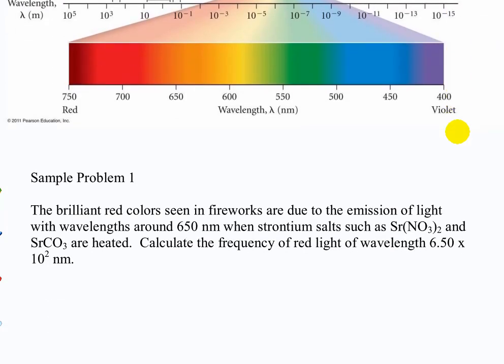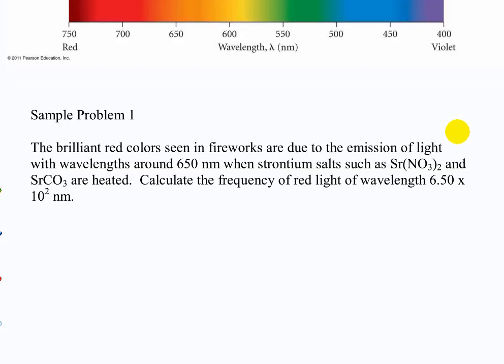So the other thing that you want to be able to do is convert between wavelength and frequency using that relationship that we just saw. So a problem like this, the brilliant red colors seen in fireworks are due to the emission of light with wavelengths around 650 nanometers when strontium salts, such as these, are heated. Calculate the frequency of red light of wavelength 6.50 times 10 to the 2 nanometers or what would also be written as just 650 nanometers. So what's the frequency of that light?